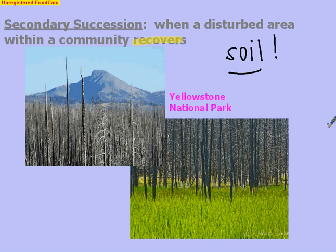For example, a forest fire, like the ones that occurred in Yellowstone National Park in the early 90s, serves as a disturbance, and the forest community was able to recover. Looking at the picture, you can see the smaller autotrophs — the grasses, the shrubs — beginning to return. Secondary succession still has soil present, we are not starting from scratch, and it's still predictable, with a predictable sequence of events, usually smaller to larger.